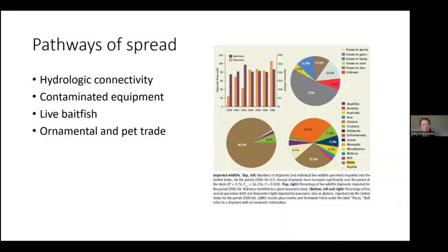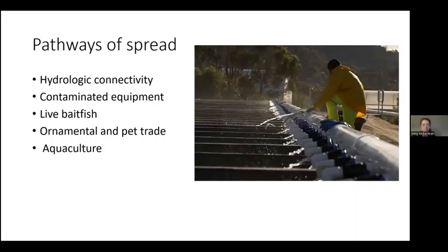The ornamental and pet trade is especially important at the global scale. From a Smith et al. paper in Science in 2009, ninety percent of live animal specimens imported into the United States between 2000 and 2006 were Pisces — marine and freshwater fish. So there's a huge volume of aquatic organisms coming into the country every single day, which is obviously a potential pathway for the spread of pathogens. Finally, aquaculture is a potential risk as well. Many food fish and bait fish and state-run hatchery programs have really excellent biosecurity, but the risk is never zero. Anytime you're moving fish across the landscape, that's a potential pathway for the spread of pathogens.